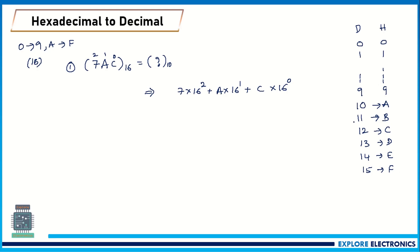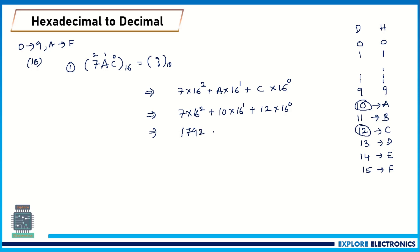Knowing these equivalences makes it easy to convert. So: 7 into 16 squared, plus A (which is 10) into 16 power 1, plus C (which is 12) into 16 power 0. Calculating: 7 into 256 gives 1792, plus 10 into 16 gives 160, plus 12 into 1 gives 12. Total is 1964 with base 10. This is how we can convert other number systems to the decimal number system.